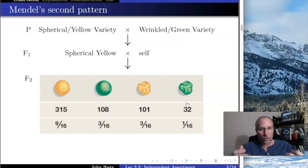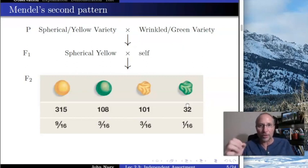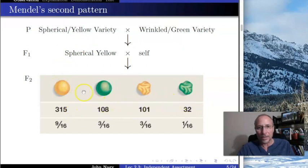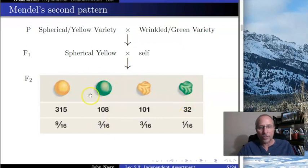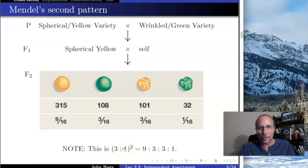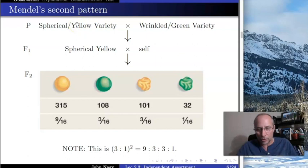Mendel was a mathematician as well as a biologist. He looked at those numbers and saw something very important immediately. He said: this tells me that seed shape and seed color are independent — meaning no matter what the seed shape is, it has no effect on the color of the seed. He saw it not as a 3-to-3-to-1 ratio but as a 3-to-1 squared ratio, and the only way you get a 3-to-1 squared ratio is if these traits are independent.